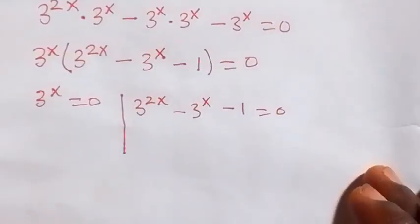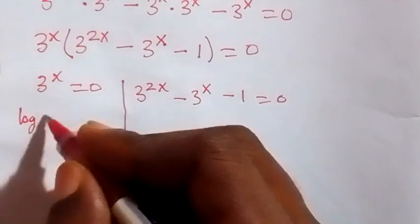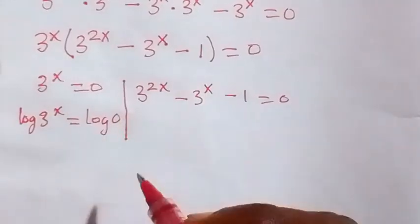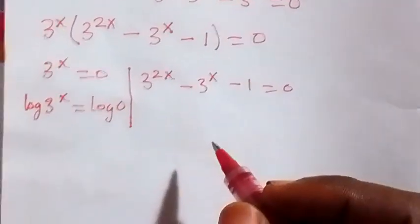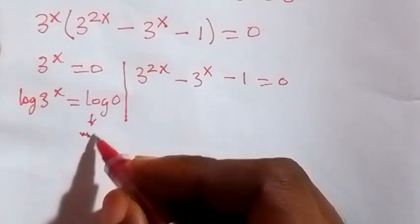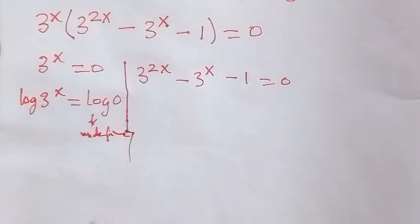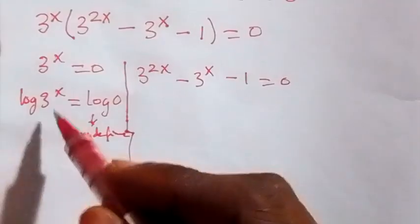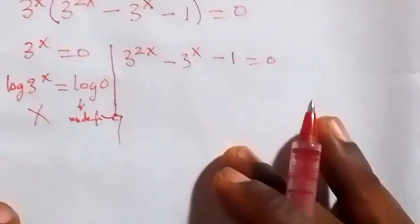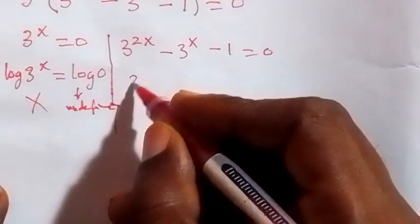Now from here, when we take the log on both sides for the first factor, we have log of 3 raised to power x equals to log 0. The log 0 here is undefined, so therefore since this is undefined, no value of x satisfies this factor — the value of x here will be undefined.